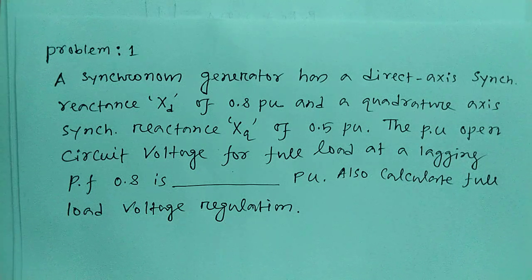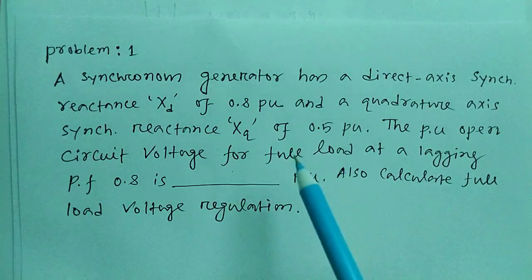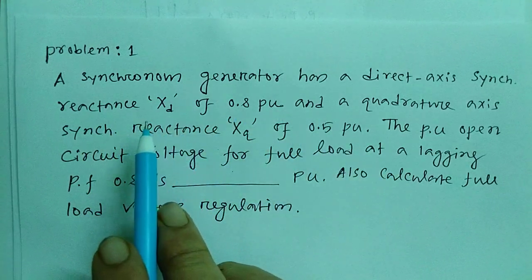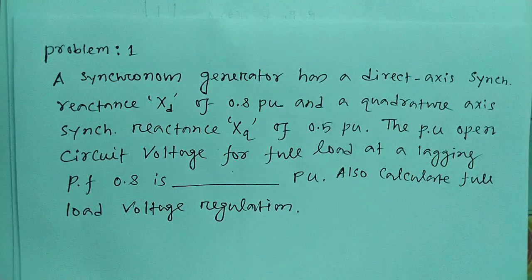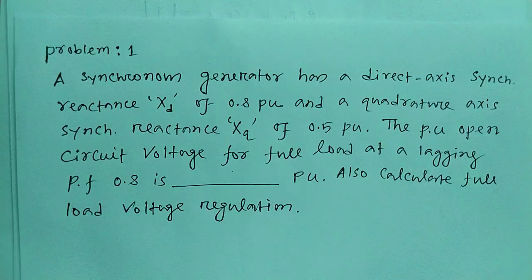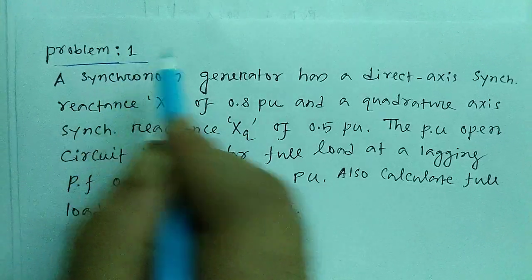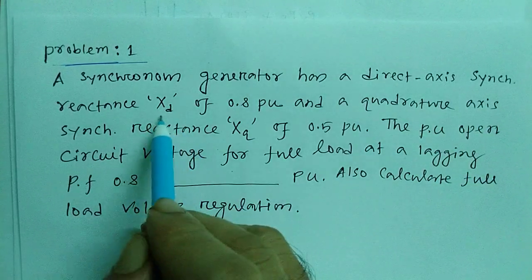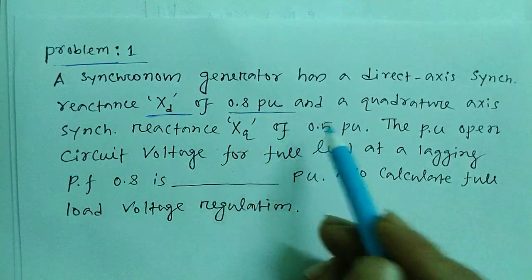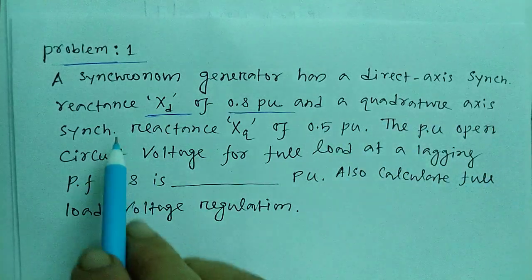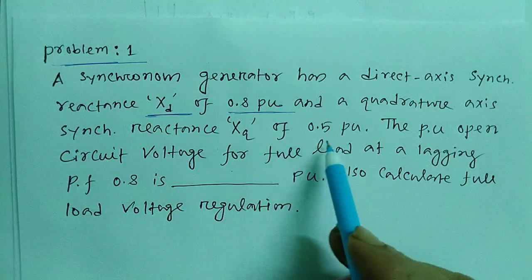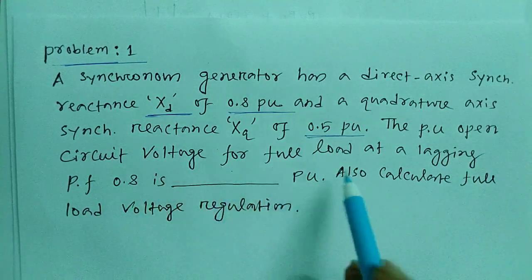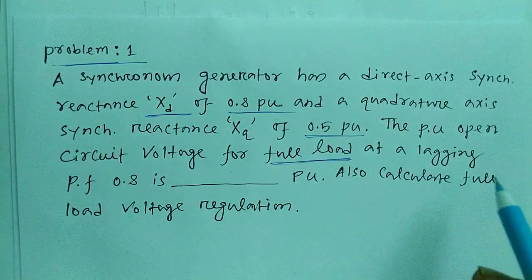Hi guys. As you can see here, I selected a standard problem from synchronous generator — Problem 1. A synchronous generator has a direct axis synchronous reactance Xd of 0.8 per unit and a quadrature axis synchronous reactance Xq of 0.5 per unit. The per unit open circuit voltage for full load at a lagging power factor